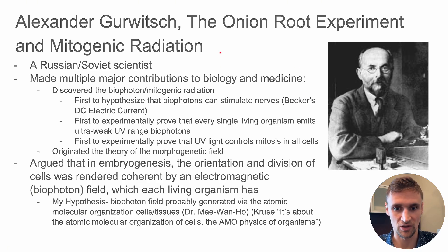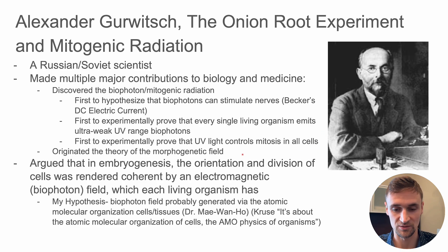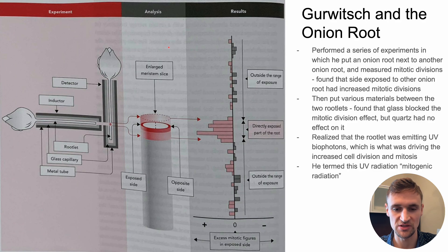That's basically the introduction to Alexander Gurwitch and his work. He did some obviously extremely important work. Now we're going to talk about the onion root experiment and how he not only discovered the existence of the biophoton, but was also the first to experimentally prove that UV light controls mitosis in all cells — a critical finding that Dr. Cruz mentioned in this podcast. You can see on the slide a diagram of the actual onion root experiment. First, let me lay out some groundwork.